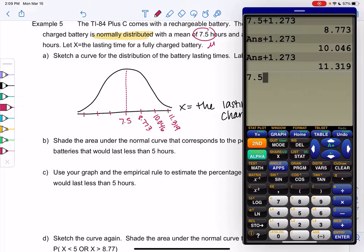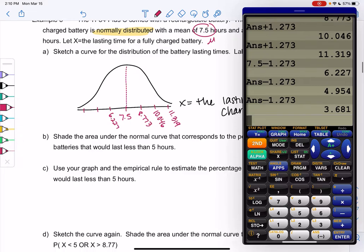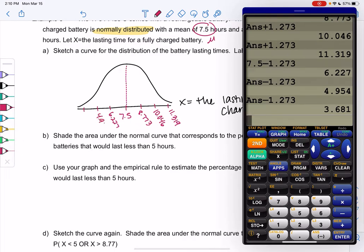And then we'll do the same, left side we'll subtract. So subtract 3 times, 1 for each standard deviation. So the first negative standard deviation would be 6.227, the second standard deviation would be 4.954, and the third would be 3.681. So the numbers are a little ugly in this example, but otherwise it's pretty similar to what we've been doing.